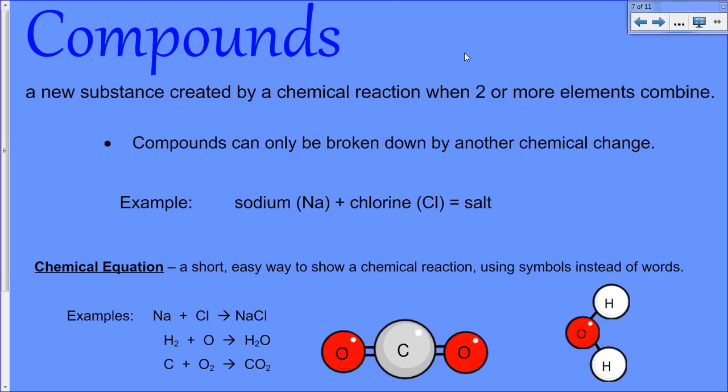Compounds are substances when two or more elements combine in a chemical change. For example, if we have sodium, which is represented by the chemical symbol Na, capital N lowercase a, and it is chemically combined, which we show with a plus sign, and chlorine, which is a capital C and a lowercase l, that becomes sodium chloride, which is also known as salt. So we use a chemical equation to show how elements combine to form compounds. Na plus Cl gives us NaCl, which is salt. Sodium plus chlorine gives us sodium chloride, also known as salt.